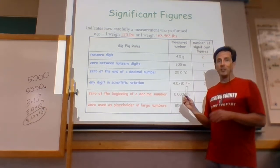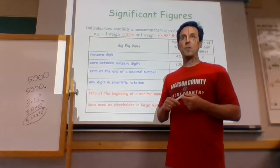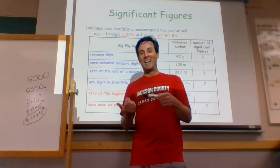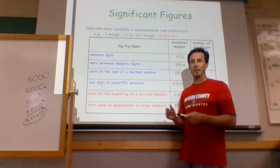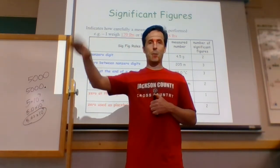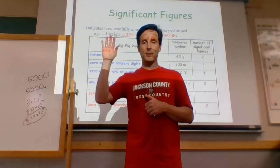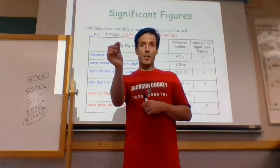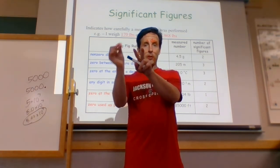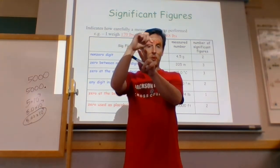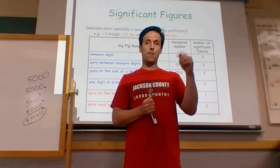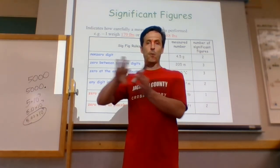The last case is zeros on the left side. If I have 0.0045, they're placeholders. The zero in front of the decimal is irrelevant — whether you put it there or not doesn't change the number. The first two zeros after the decimal are only there so that the 4 goes in the thousandths position. The 4 is my first sig fig and the 5 is my second sig fig. All the numbers before the 4 are just placeholders.